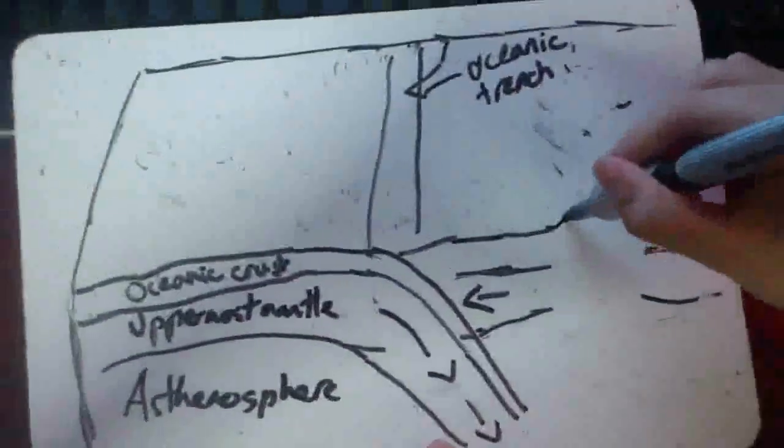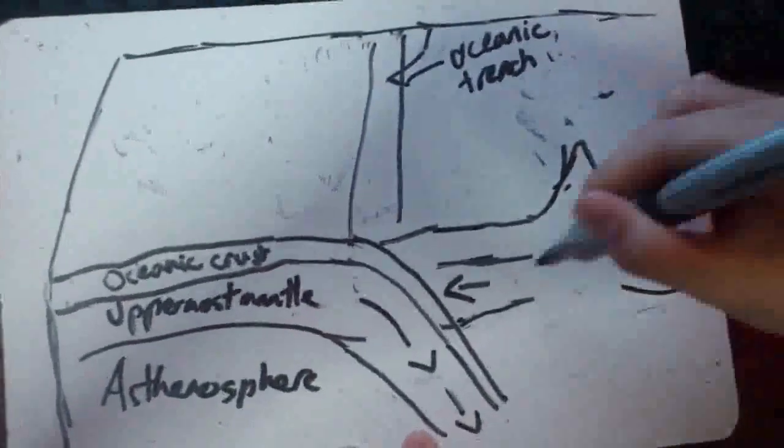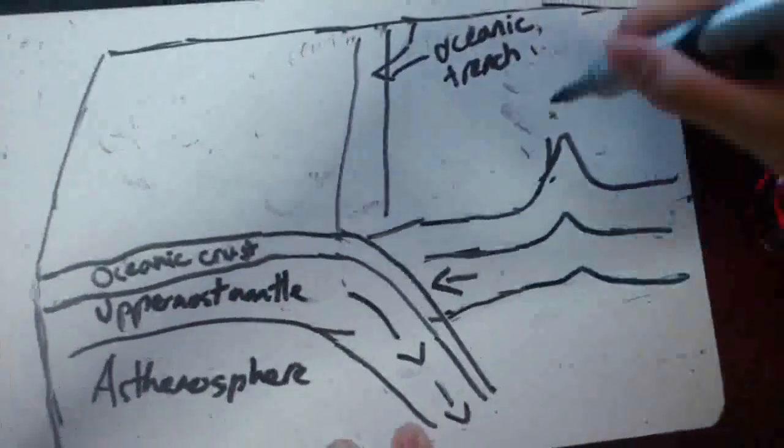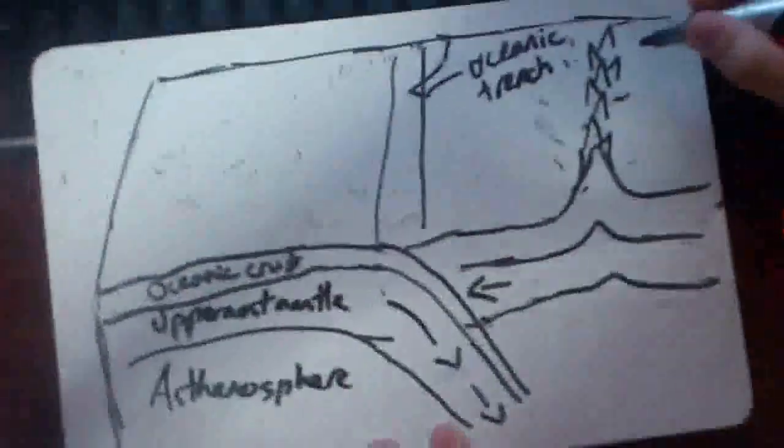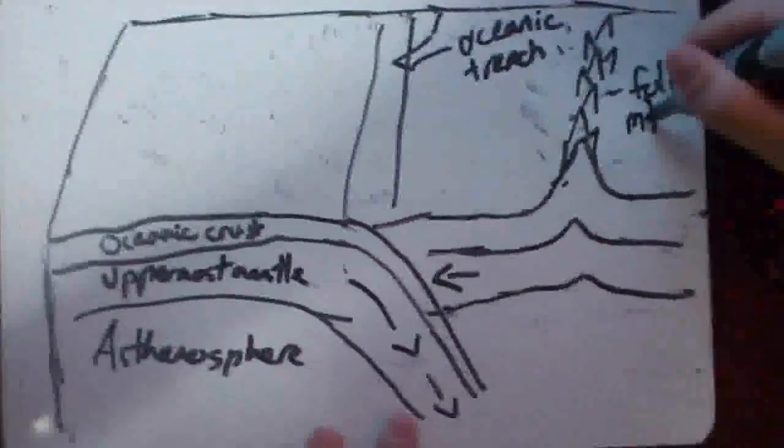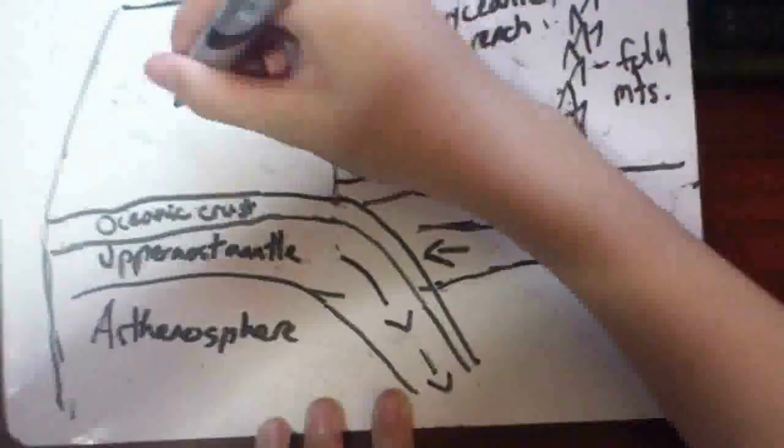The continental plate buckles and folds, forming fold mountains. At the subduction zone, solid mantle material melts and forms magma.